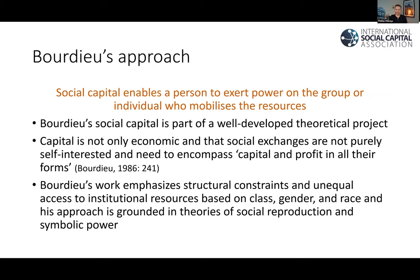Pierre Bourdieu's approach is distinctly different from the others. For his approach, social capital enables a person to exert power on a group or individual who mobilizes the resources. It is still about the network and resources, similar to both the network and resource approaches. However, Bourdieu's approach really focuses on structural constraints that create unequal access to institutional resources based on class, gender, and race. His approach is grounded in theories of social reproduction and social power — about how an individual's position within a social structure can afford them many social capital benefits. It's kind of power over others rather than power from or power to others.